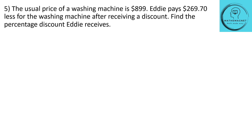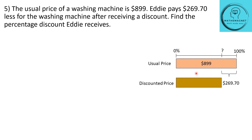Question number 5. The usual price of a washing machine is $899. Eddie pays $269.70 less for the washing machine after receiving a discount. Find the percentage discount. The usual price of $899 is your base value, so that will become your 100%. The discounted price — we know Eddie paid $269.70 less than the usual price. So that becomes your discount amount.